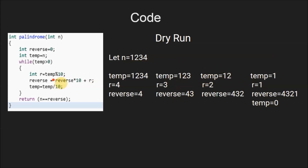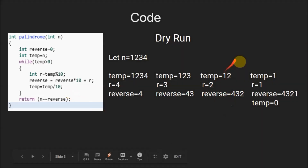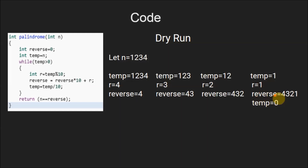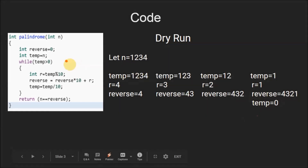Since temp is 12, greater than 0, we enter the loop again. The value of r is 2, as 12 mod 10 equals 2. Reverse becomes 43 times 10 plus 2, so reverse is 432. Then temp becomes 12 divided by 10, which is 1. Since temp is still greater than 0, we enter the loop again. R becomes 1 mod 10, which is 1. Reverse becomes 432 times 10 plus 1, giving 4321. Temp becomes 1 divided by 10, which is 0. Since temp is no longer greater than 0, we exit the while loop and reach the return statement.